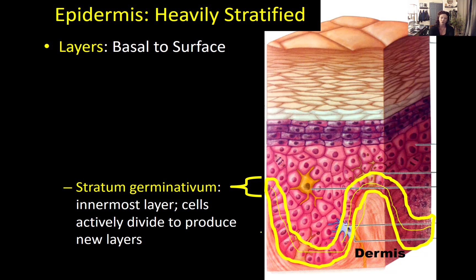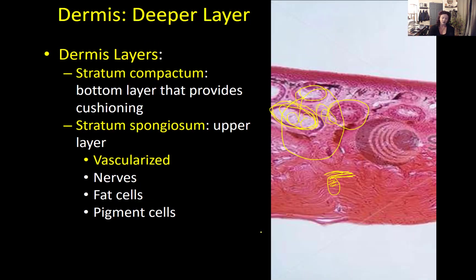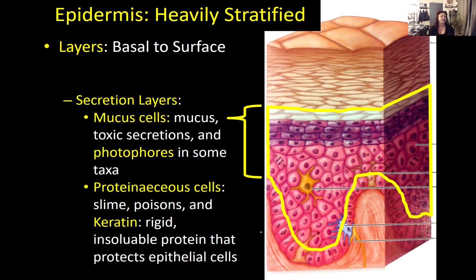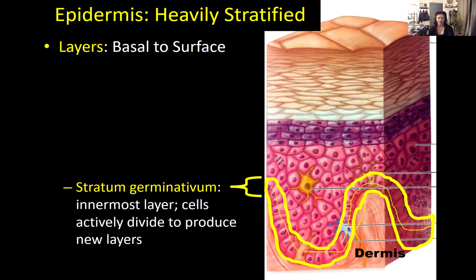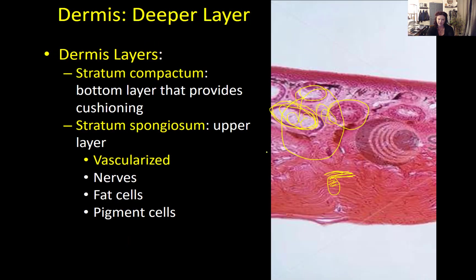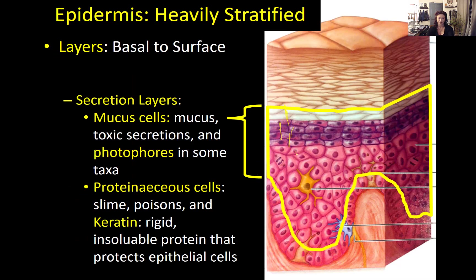Between the innermost stratum and the surface of the skin, there is a whole set of layers referred to as the secretion layers of the skin. Each of these different layers has a different function. The secretion layers differ in different groups of vertebrates, which is why we won't spend a lot of time on them, but there are some important functions to know.